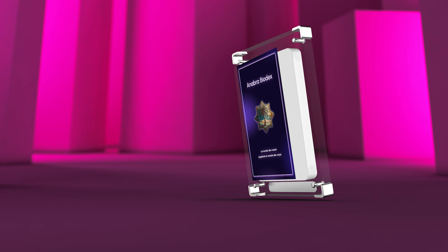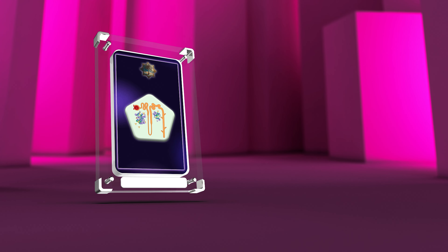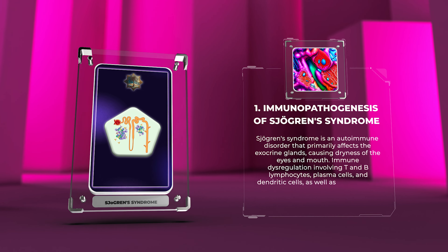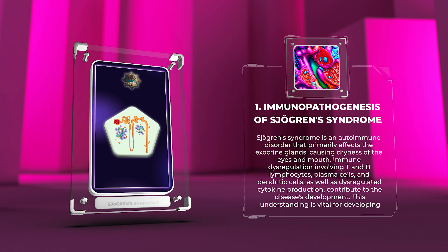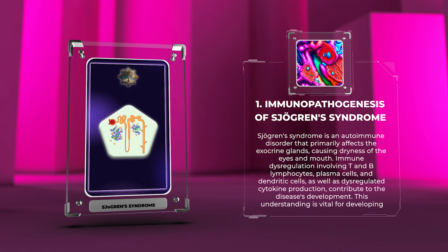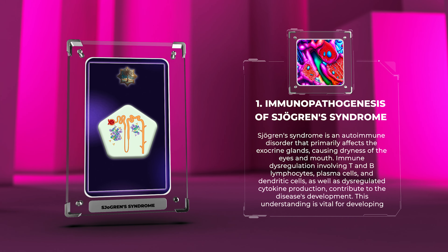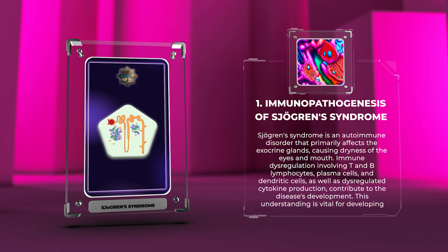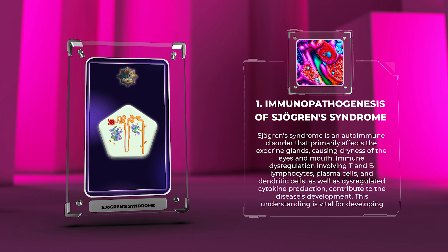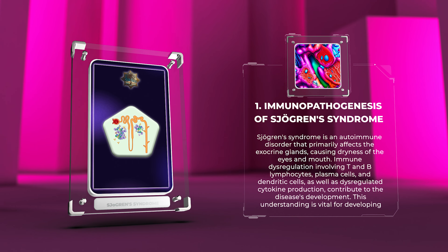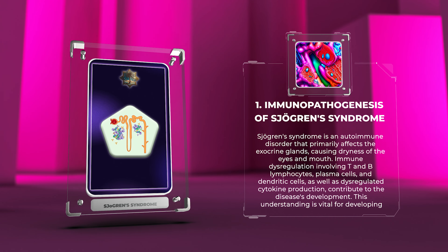Sjogren's Syndrome is an autoimmune disorder that primarily affects the exocrine glands, causing dryness of the eyes and mouth. Immune dysregulation involving T and B lymphocytes, plasma cells, and dendritic cells, as well as dysregulated cytokine production, contribute to the disease's development. This understanding is vital for developing effective treatments.